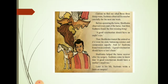Before operating the horse, Shalihotra observed every part of the horse. Sushruta watched his guru performing surgery on the horse and noticed that Shalihotra was observing every part of the horse carefully. From this, Sushruta found the first missing thing.